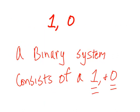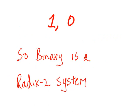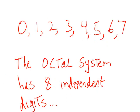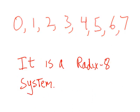A binary system consists of a 1 and a 0, so binary is a radix 2 system. The octal system has 8 independent digits: 1, 2, 3, 4, 5, 6, 7, 8. It is a radix 8 system.